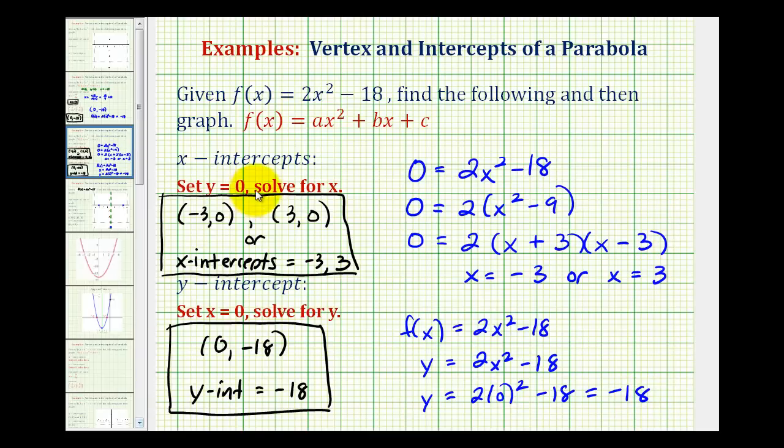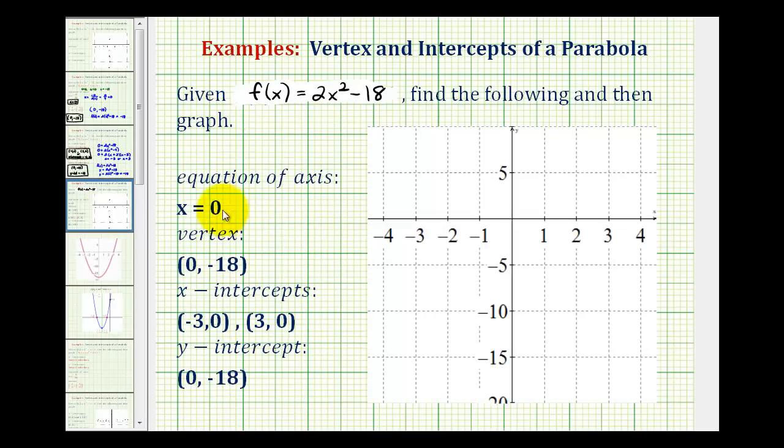Now let's put all these pieces together to graph our function. We'll start by sketching the axis of symmetry, which has equation x equals 0, the y-axis. The vertex has coordinates 0 comma negative 18, which is also our y-intercept. The x-intercepts are negative 3 and positive 3, so the parabola passes through this point and this point.